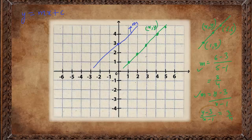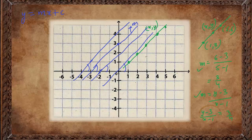If we say these lines are parallel — all the lines are parallel — then by geometry, parallel lines have corresponding angles, which is similar to the concept of gradient, rise over run. So parallel lines have the same gradient but they intersect the y-axis at different points.